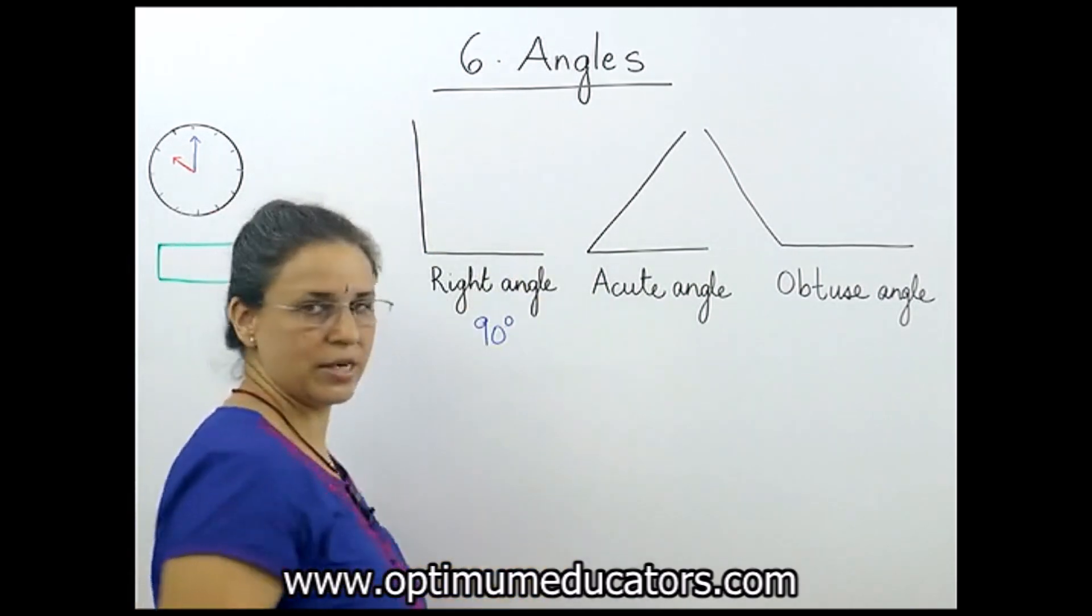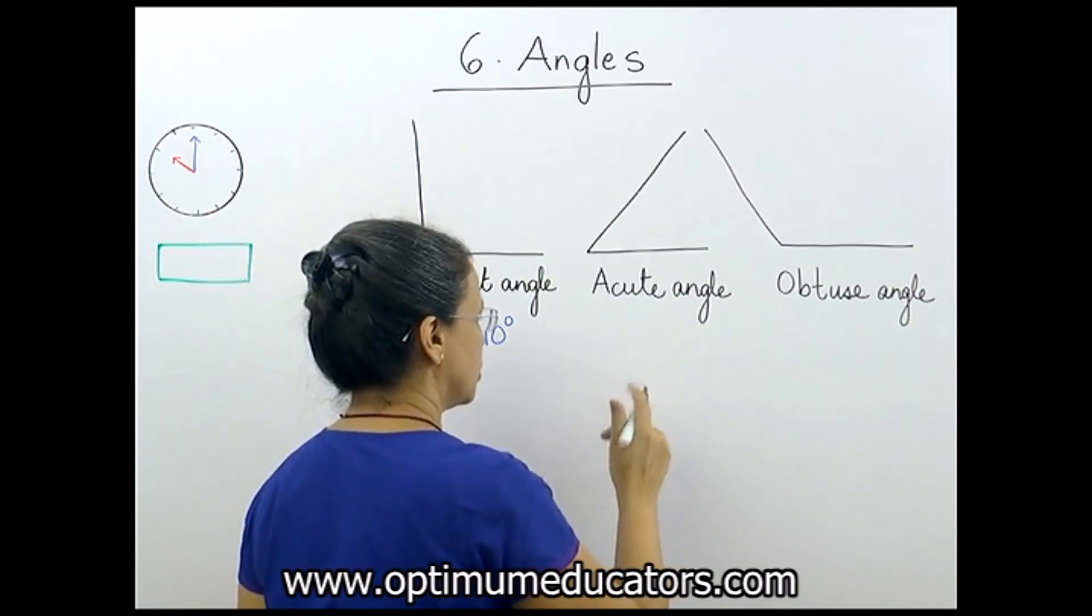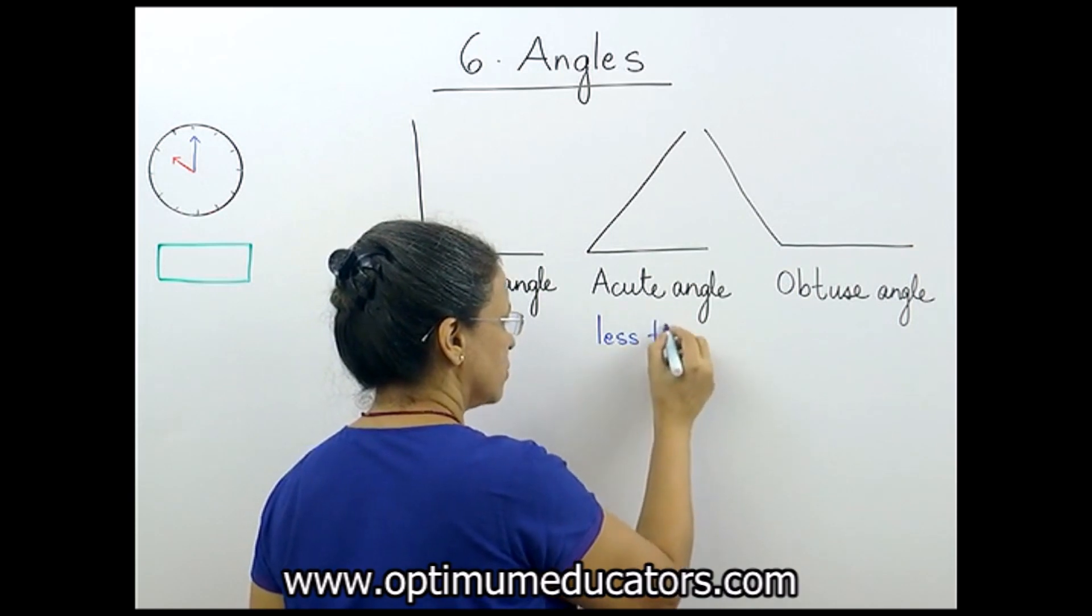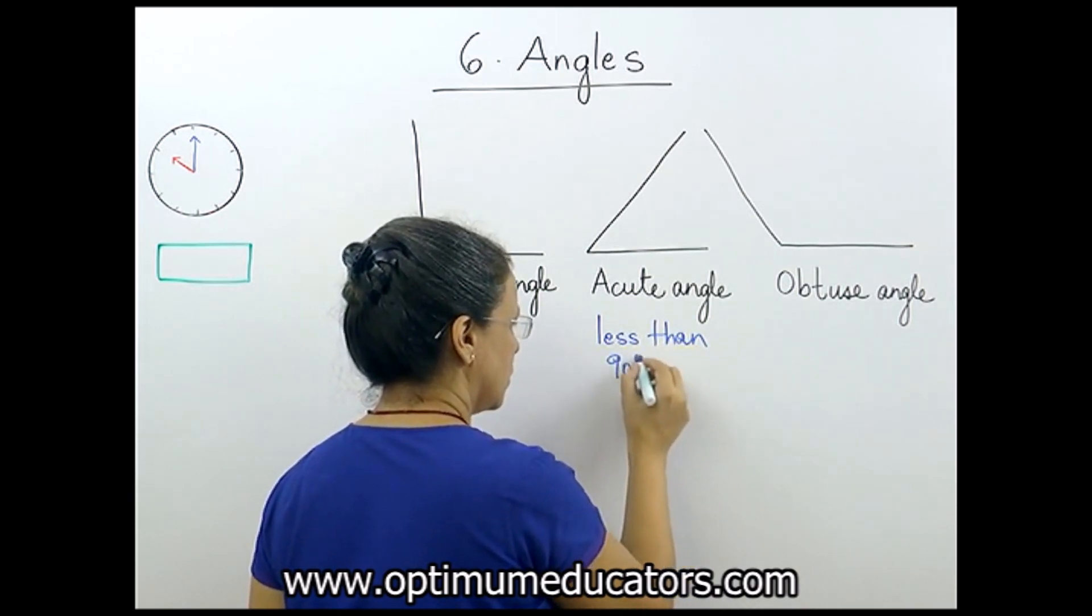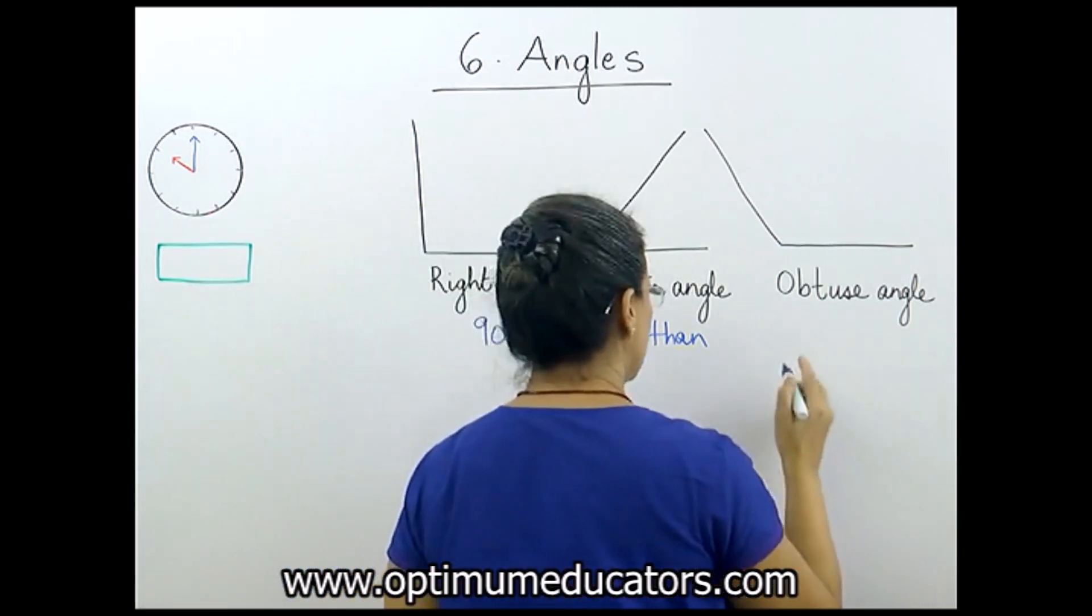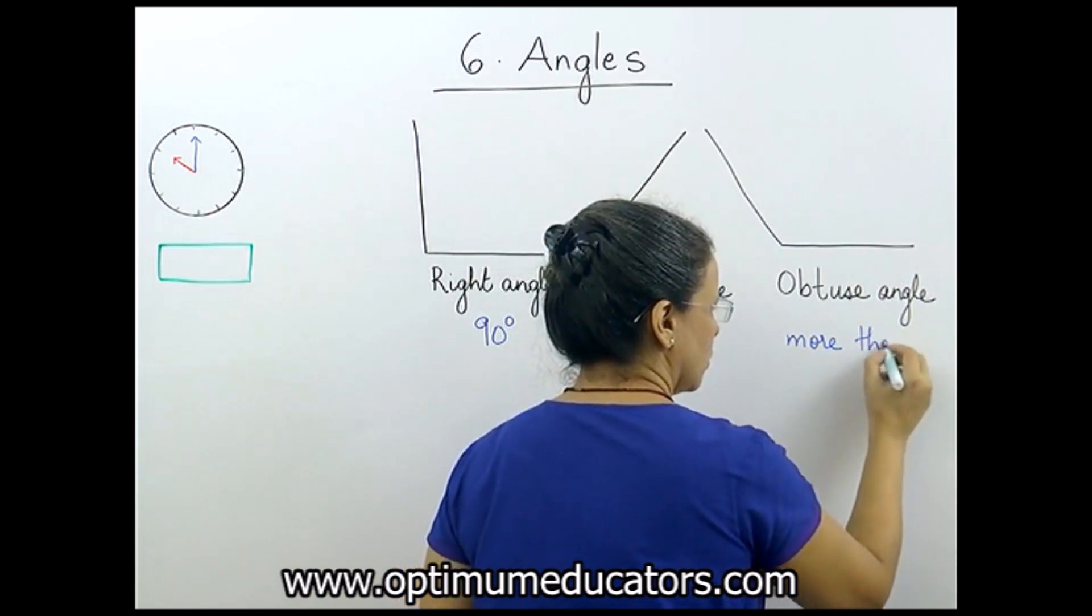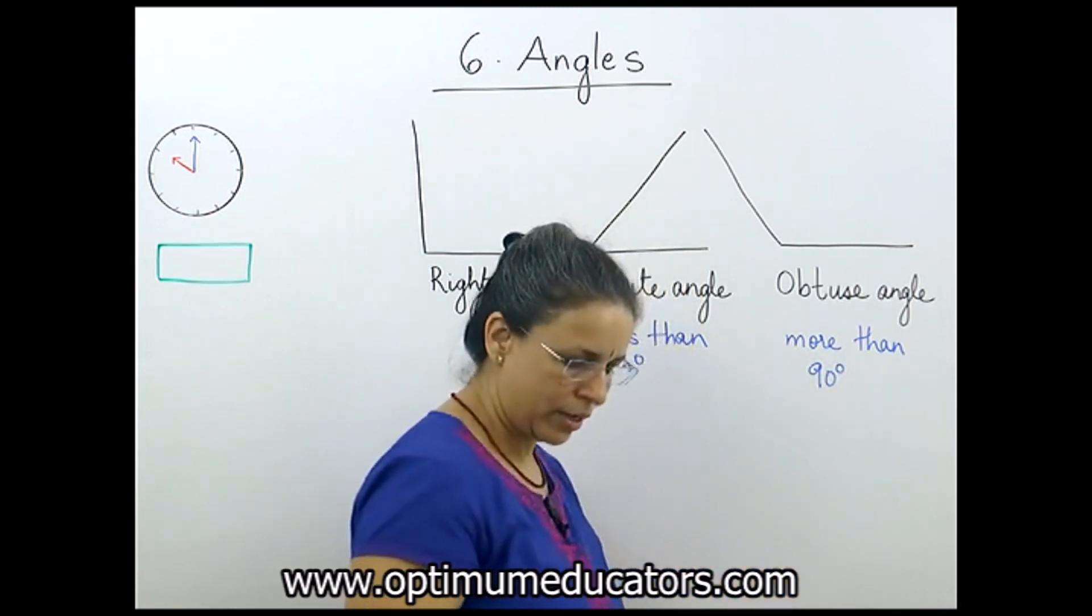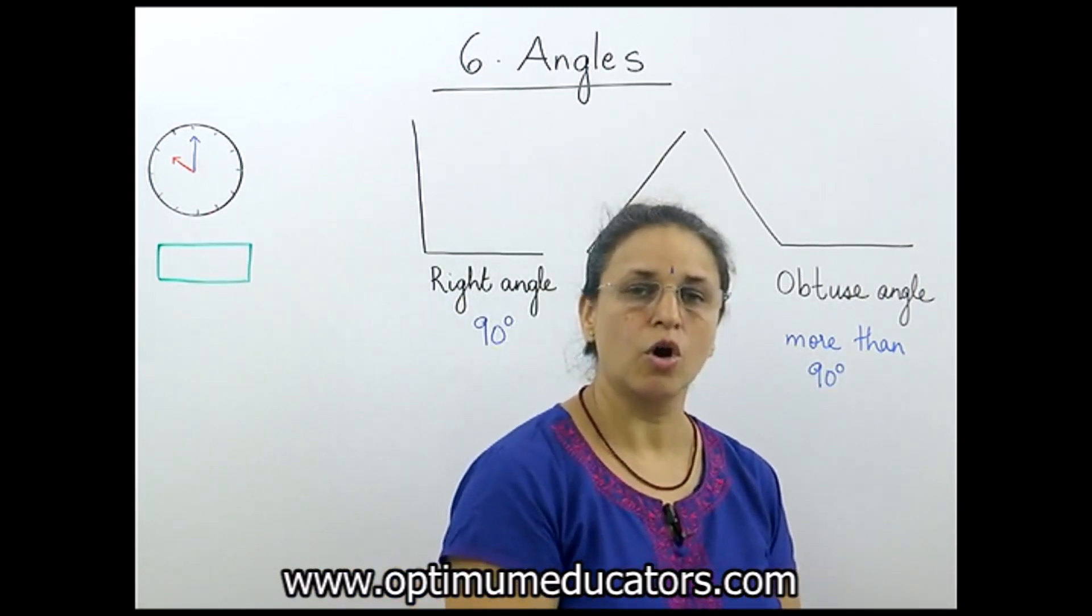An acute angle measures less than 90 degrees, and an obtuse angle measures more than 90 degrees. Now let us see if it is really less than 90 degrees or more than 90 degrees.